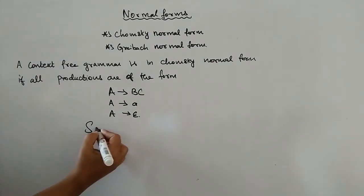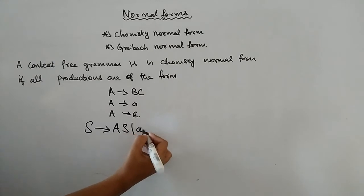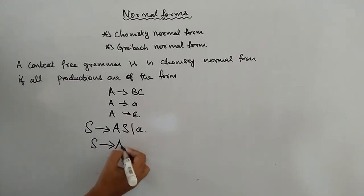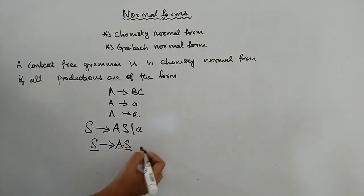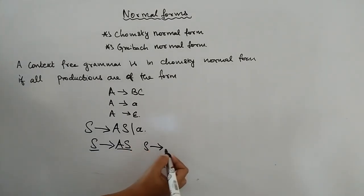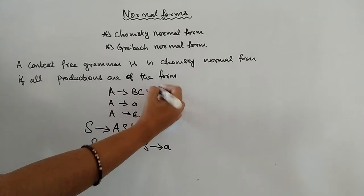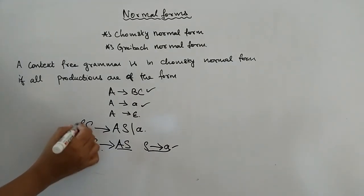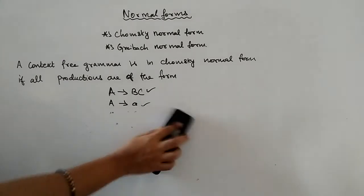Let's take one grammar as an example. Here S is generating A and S, which means a non-terminal is generating two non-terminals — this obeys the first rule. And S generating a terminal obeys the second rule. So we can conclude this grammar is in the Chomsky Normal Form.